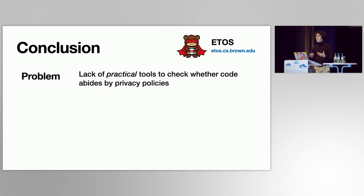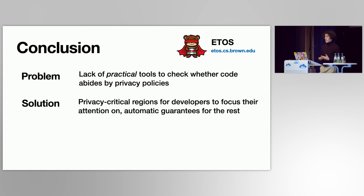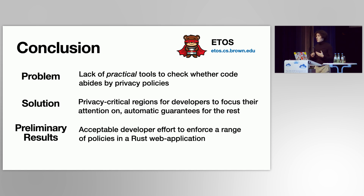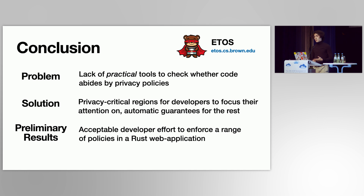In conclusion, the problem Alohomora addresses is the lack of practical tools to check whether code actually abides by privacy policies. Our solution is a system that employs privacy-critical regions to let developers focus their attention on what matters and get automatic guarantees for the rest. In our preliminary results, we evaluated Alohomora on a web submission system, which incurred acceptable developer effort and was able to enforce a range of policies in Rust web applications.